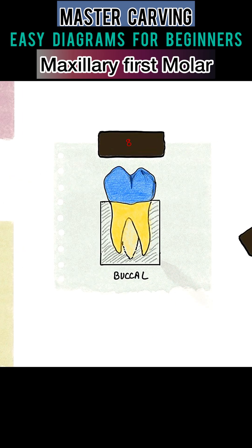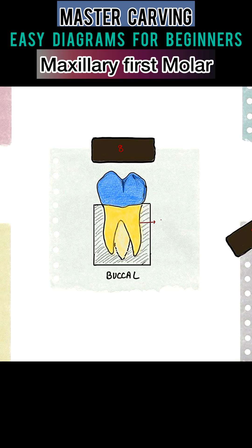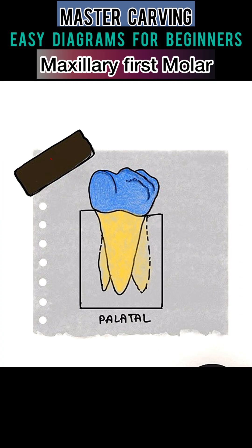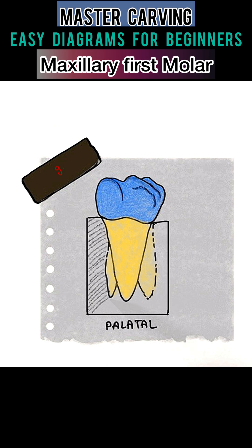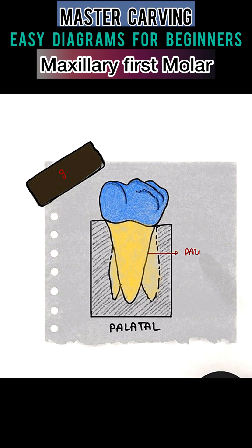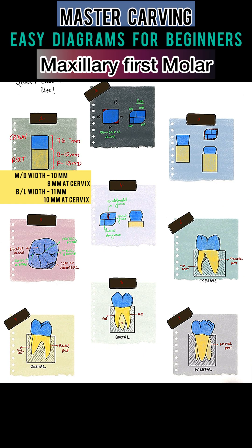Similarly, the mesiobuccal and distobuccal roots can be seen from the buccal aspect. From the palatal aspect, remove the wax block after making an outline, and you will see the palatal root. Finally, carve the apical third so that the root won't break. These are the basic diagrams for beginners — save it for later reference.